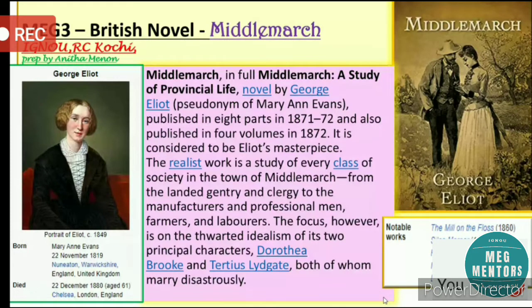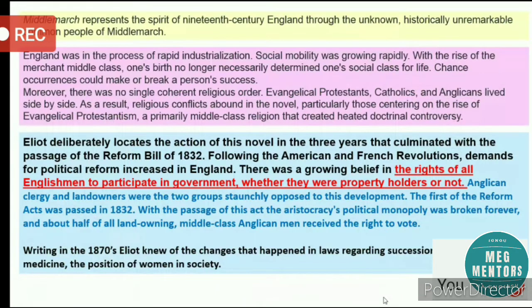Middlemarch represents the spirit of 19th-century England through the ordinary, historically unremarkable common people of Middlemarch. What Eliot is presenting is the history of common people as they lived in 19th-century England. This was a time of rapid industrialization, and social mobility was growing rapidly with the rise of the merchant middle class. One's birth no longer necessarily determined one's social class for life, and the social hierarchy was changing.